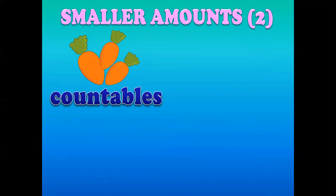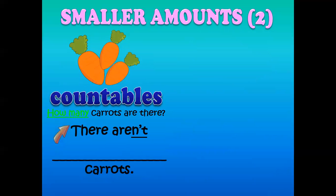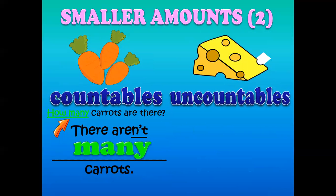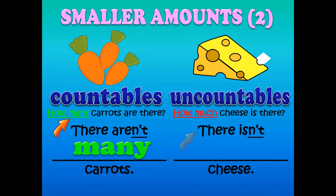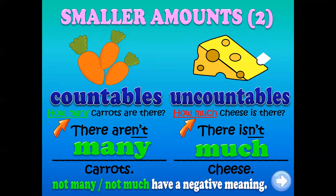Look at another example — smaller amounts. Here you have vegetables: carrots. How many carrots are there? You can say: there are many carrots. For uncountables: how much cheese is there? There isn't much cheese. Not many and not much have a negative meaning. Remember: many is for countable nouns and much is for uncountable nouns. Many carrots, many tomatoes, many people. Much cheese, much oil, much grass, much ice cream.